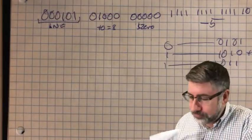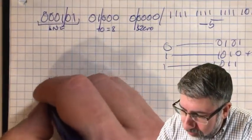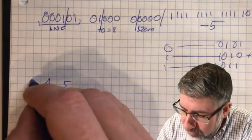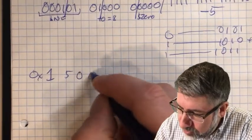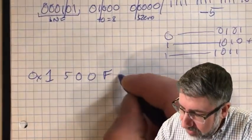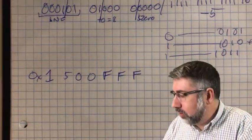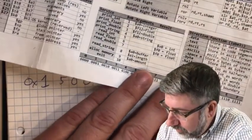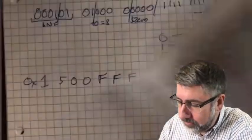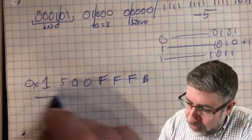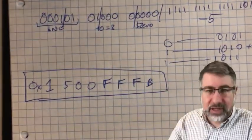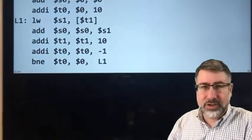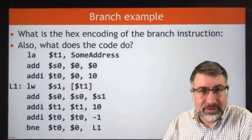Breaking the full instruction into groups of four bits for hex: the first group is 0001 = 1, then 0101 = 5, then 0000 = 0, then 0000 = 0, giving us 1500 for the upper half. Then the lower half, 1111 1111 1111 1011, gives us FFFB. So the full hex encoding is 0x1500FFFB. That is the hex encoding for the branch instruction that will take you backwards five instructions. Remember: branches are always relative to the program counter, and they are conditional.